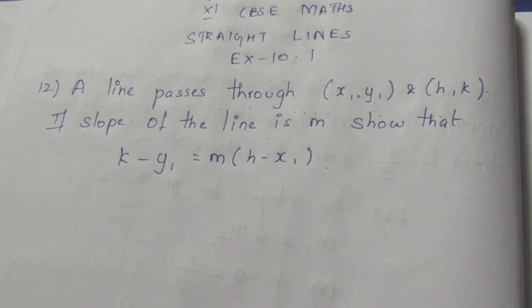Let's see the question. A line passes through x1, y1 and h, k. If the slope of a line is m, they are given the slope of a line to be m. Show that k minus y1 is equal to m into h minus x1.